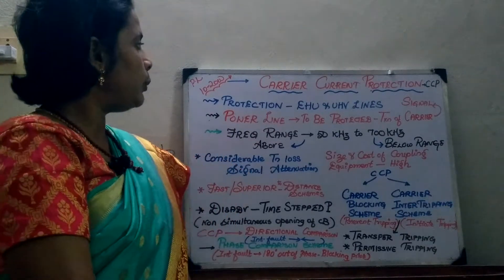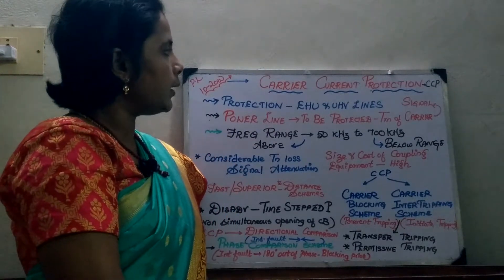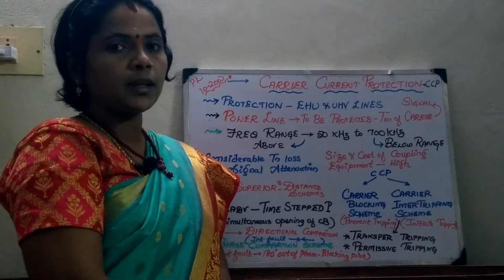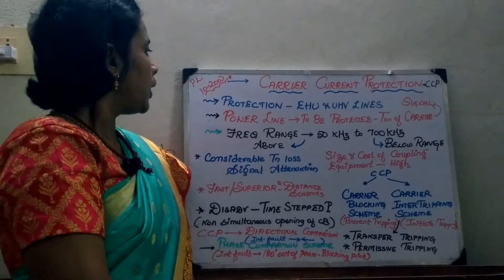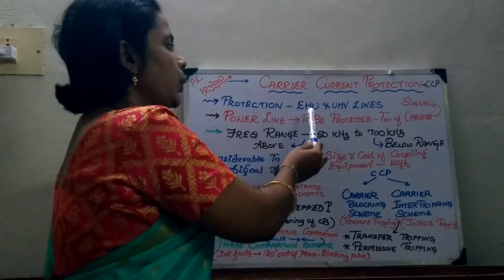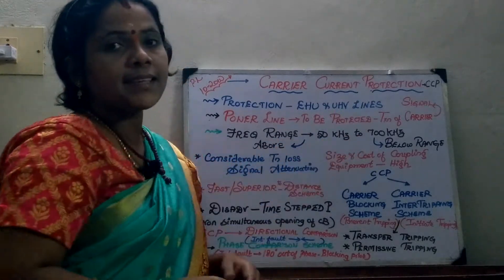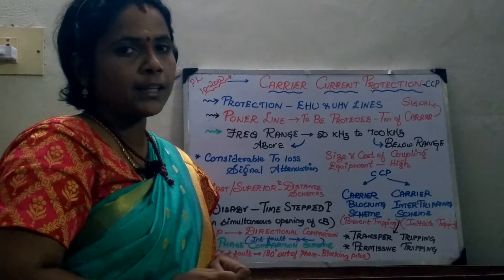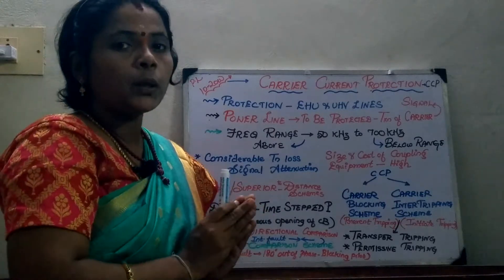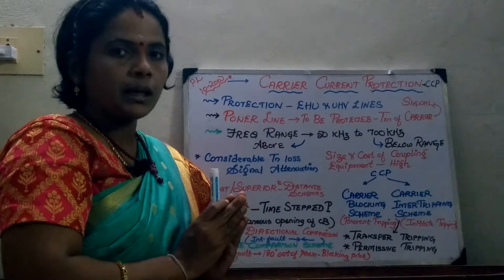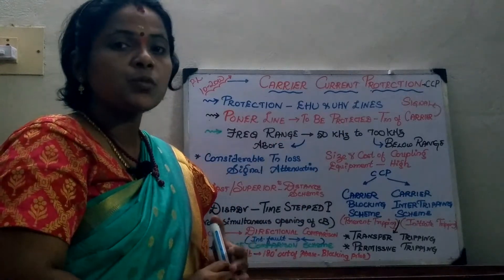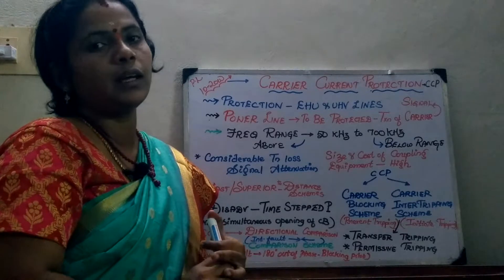In today's session we will be seeing about carrier current protection of transmission lines. This comes under the pilot relaying scheme. It is mainly used for the protection of EHV and UHV lines — extra high voltage and ultra high voltage lines. The speciality is that the same power line that has to be protected is also used as a transmission medium for the carrier wave.